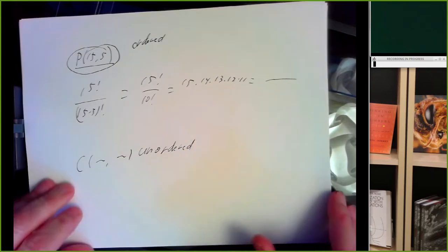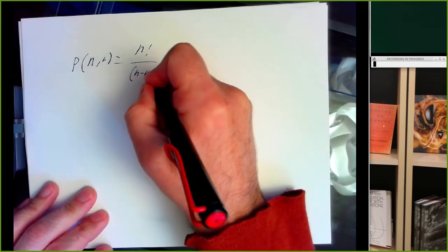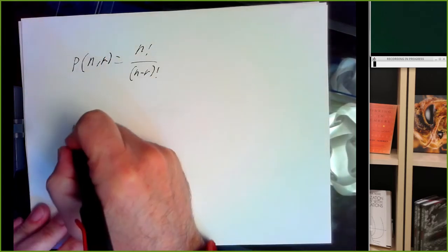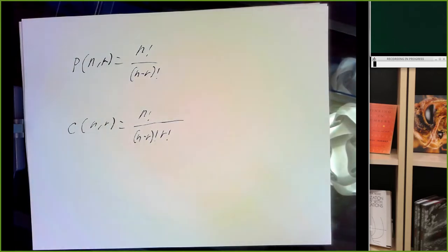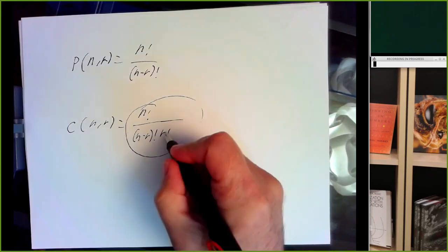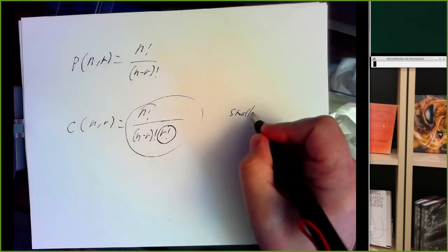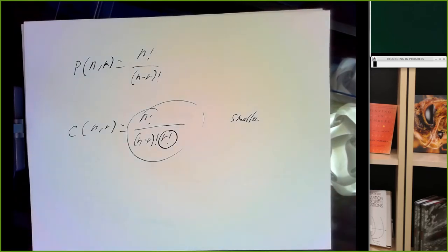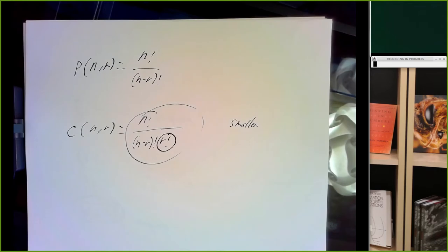One way to remember is by the formulas. The formula for the number of R-permutations on N objects gives a larger number. The formula for combinations is smaller because we're taking the number of permutations and dividing by a factor. If you're picking 10 flowers from a flower shop, you can just grab 10 and you're done — that's an unordered combination. If you're arranging those 10 flowers side by side in a certain way, that's more possibilities — that's the ordered permutations.